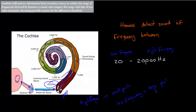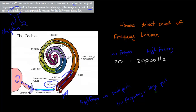The reason I mention this is because the dot point says students will process information from secondary sources to outline the range of frequencies detected by humans as sound, and compare this range with two other mammals — discussing possible reasons for the differences identified. The two I've chosen are the dolphin and the bat.